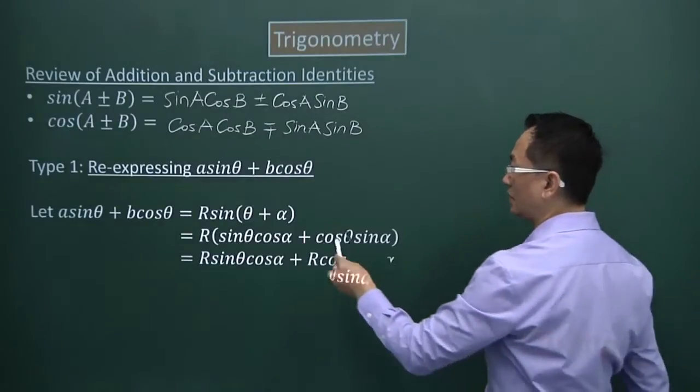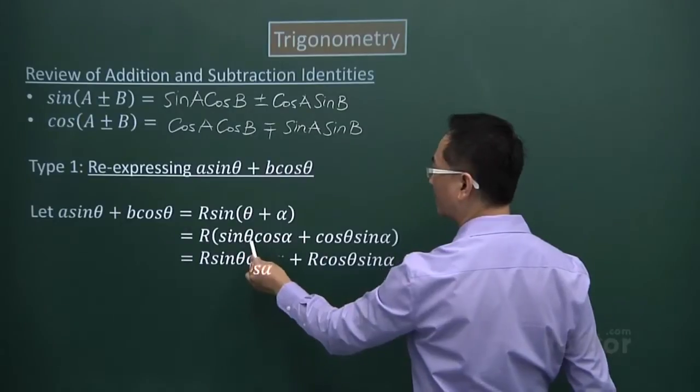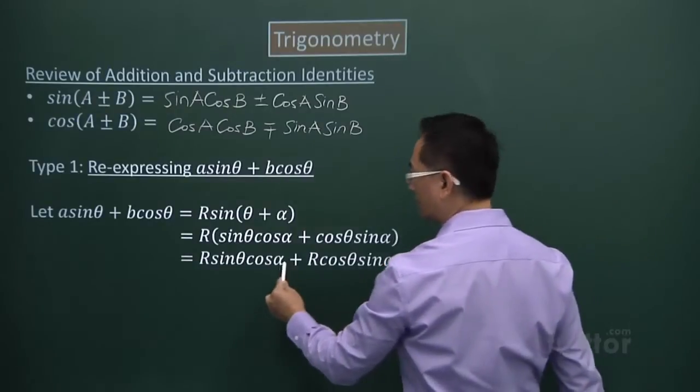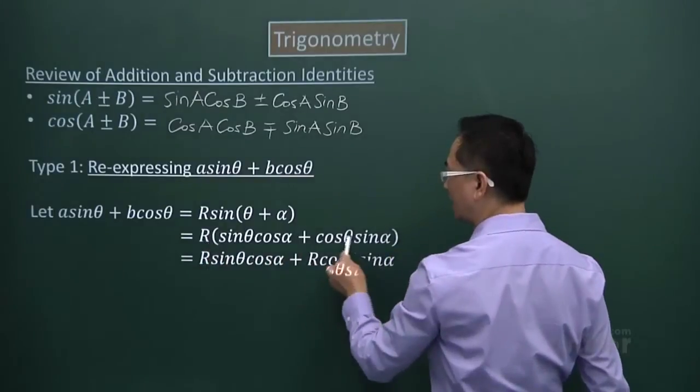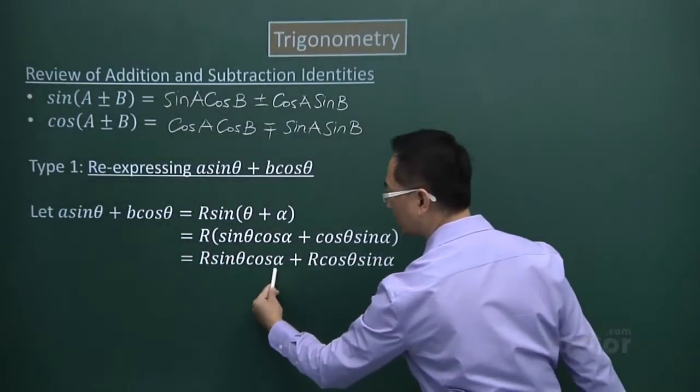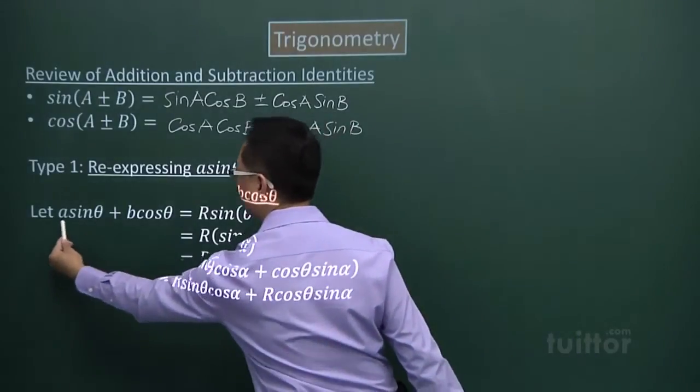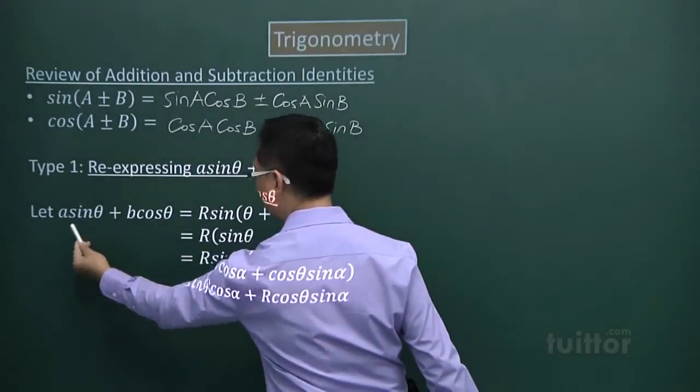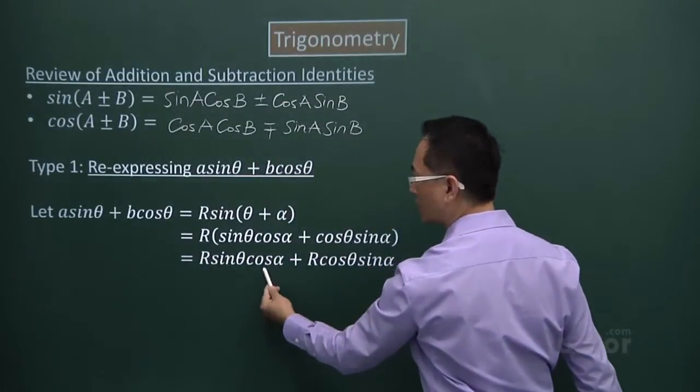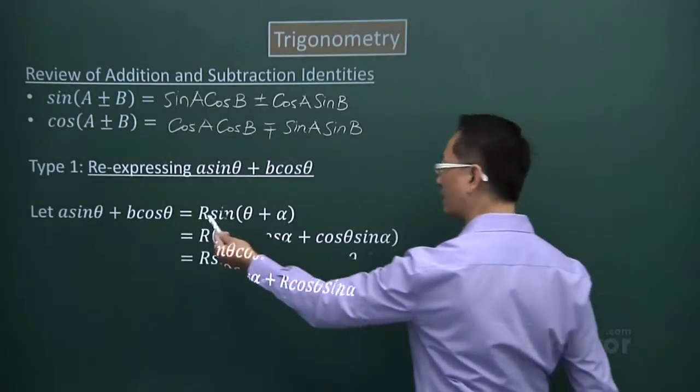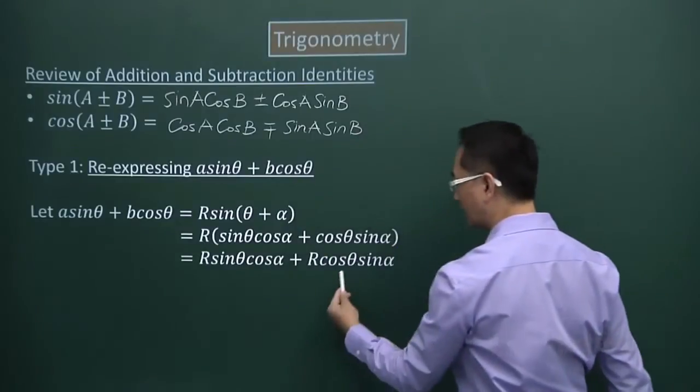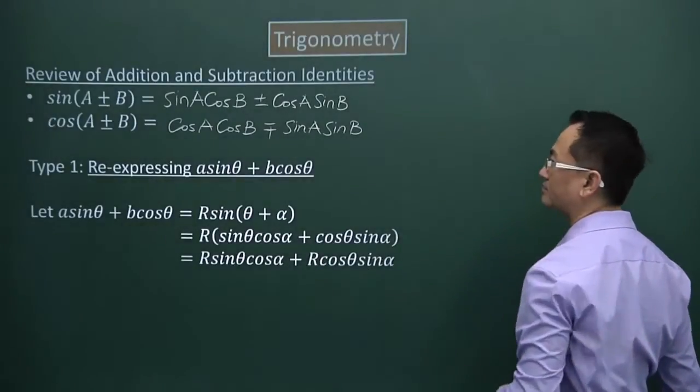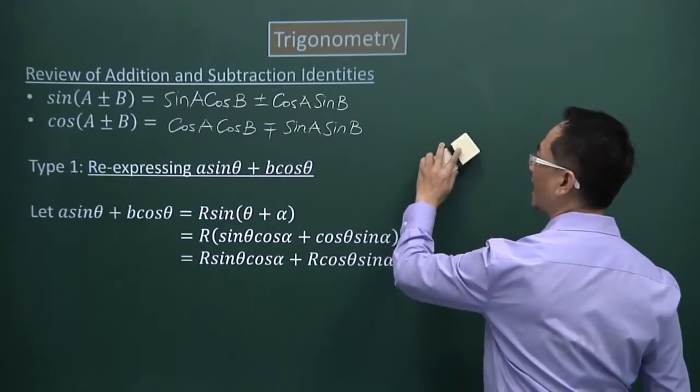So if I expand that, then I have sinθ cosα plus cosθ sinα. Expand it by multiplying the R into the expression. This first part in the expression is compared to the first part of expression here. So if I take away the sinθ and the sinθ there, my A will be R cosα. So also here, if I take away the cosθ and the cosθ here, the B will be equal to R sinα. You see this continue in the next frame.